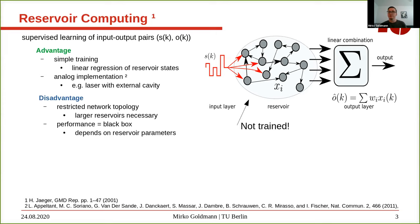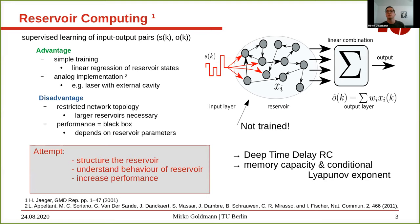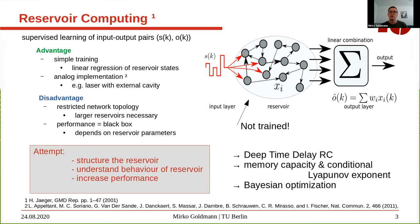The performance of the reservoir computing scheme strongly depends on the parameters of the reservoir, which is more or less like a black box function. The important part is that the reservoir is not trained. In our approach, we try to find a structure for the reservoir, understand its behavior, and increase performance using that knowledge. We do this using deep time delay reservoir computing, using memory capacity and conditional Lyapunov exponents to understand the behavior, and then Bayesian optimization to increase performance.